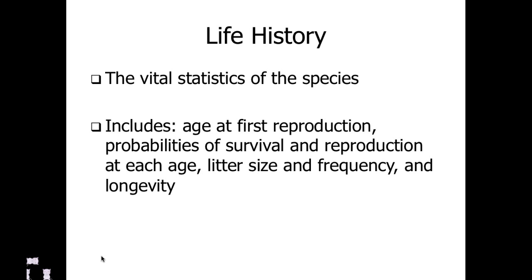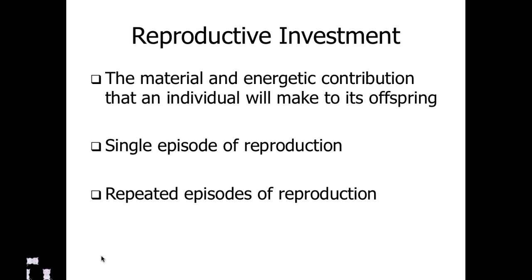For any species, the aspects of life history are going to include the age of first reproduction, the probability of survival of the offspring, the probability of survival of the parents, the litter size, how frequently they have a litter, and the life expectancy for individuals in that population. This is often tied with reproductive investment — how much time and energy it takes to have and raise offspring. In general, the more time parents spend rearing offspring, the fewer offspring they'll have.